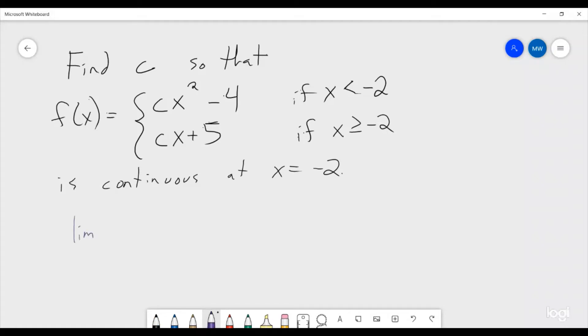So if we look at the limit as x goes to negative 2 from the left of f of x, well this is just going to be the limit as x goes to negative 2 from the left of the function when we are smaller than negative 2. So that means we're going to just be looking at cx squared minus 4, this is going to be equal to c times 4 minus 4. Because at this point we can just plug in and see what we get.